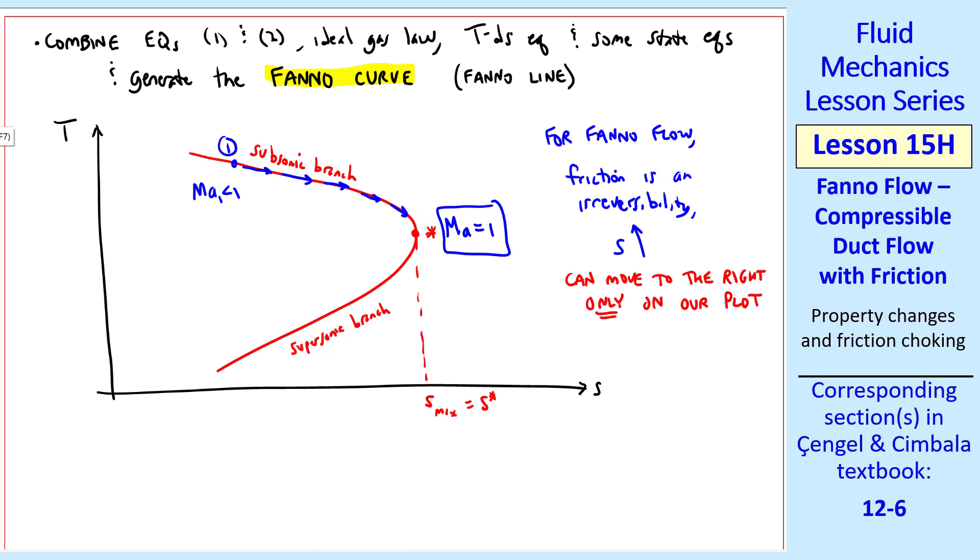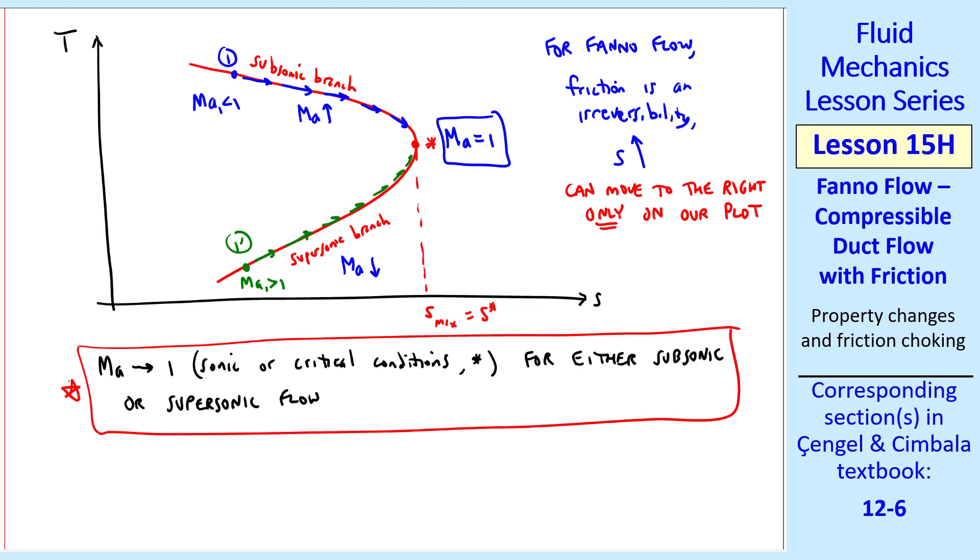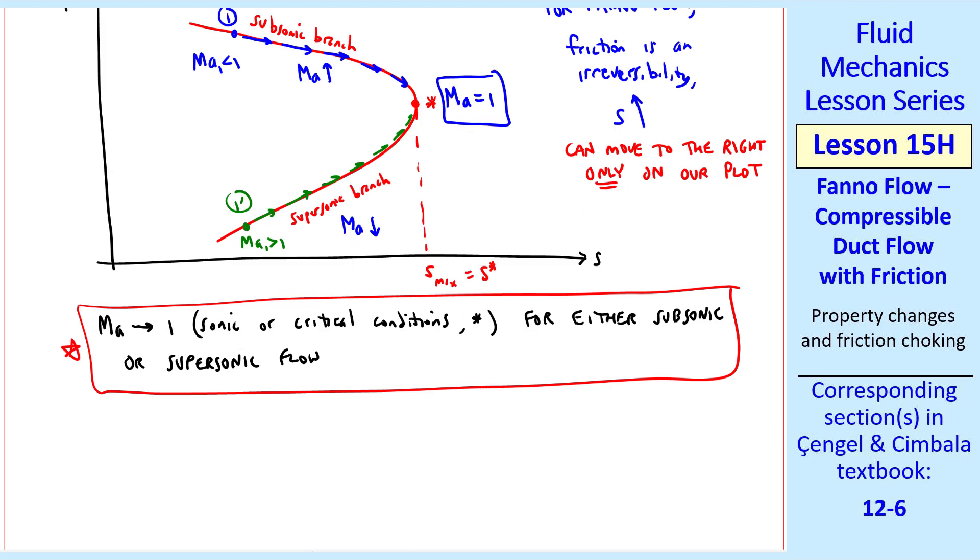You can also imagine a situation where you have more roughness in the pipe, and therefore friction factor increases. Either way, you can only move to the right. Similarly, if we start with supersonic flow, again we must move to the right, increasing S, until we reach Mach number 1. For the subsonic case, Mach number increases, and for the supersonic case, Mach number decreases. In either case, Mach number approaches 1, which we call sonic or critical conditions, with a star superscript, for either subsonic or supersonic flow. But now it's friction that's driving this flow, rather than heat transfer.